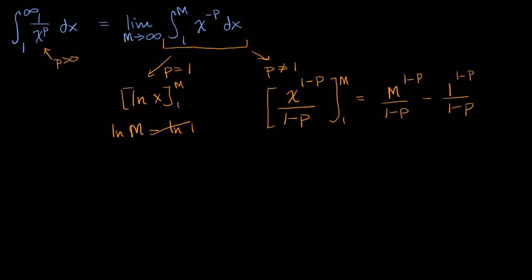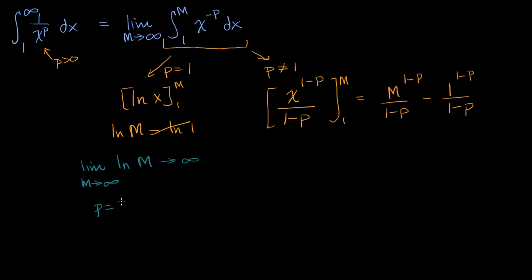Now let's take the limits. We want to take the limit as m approaches infinity. What is the limit as m approaches infinity of the natural log of m? Well, if m goes unbounded to infinity, the natural log of that is still going to go to infinity. So when p equals one, this thing doesn't converge — it's just unbounded. So p equals one: we diverge.